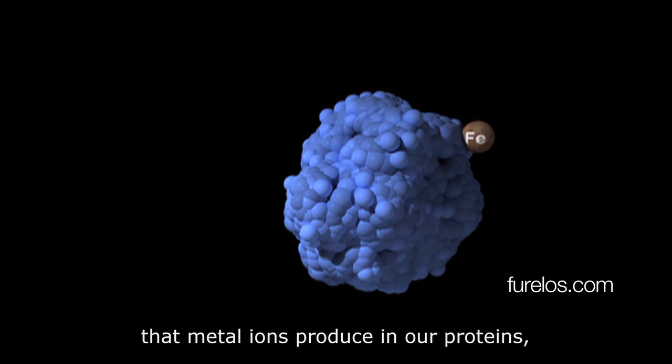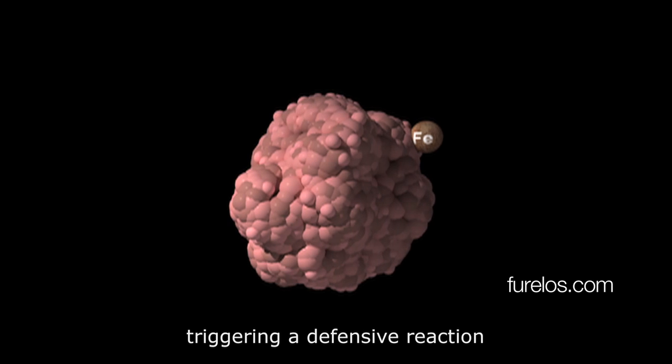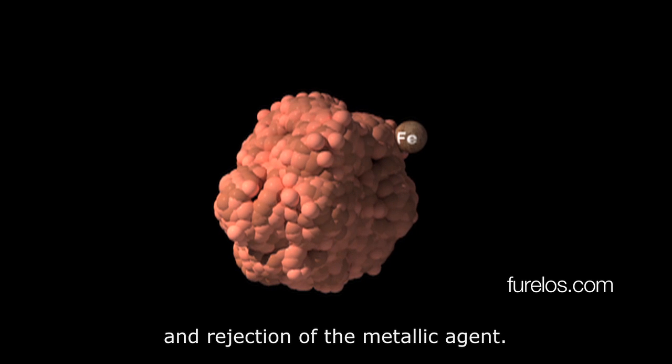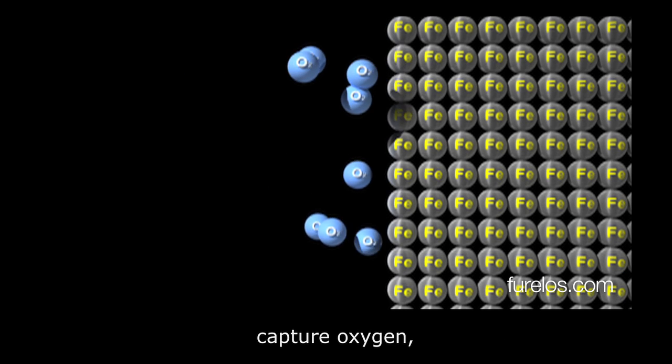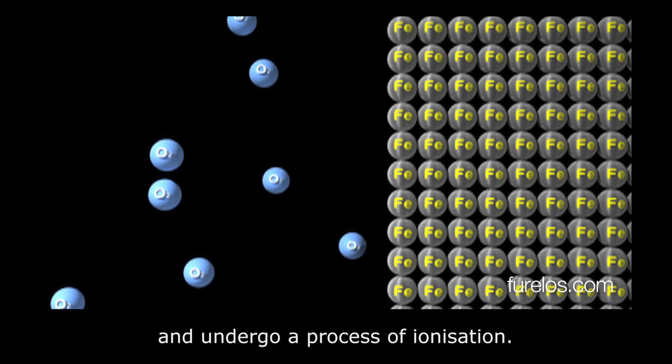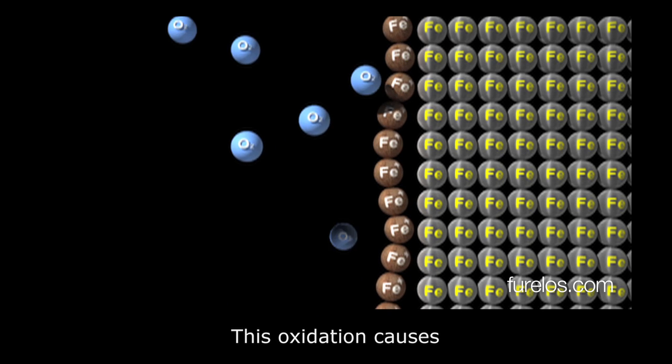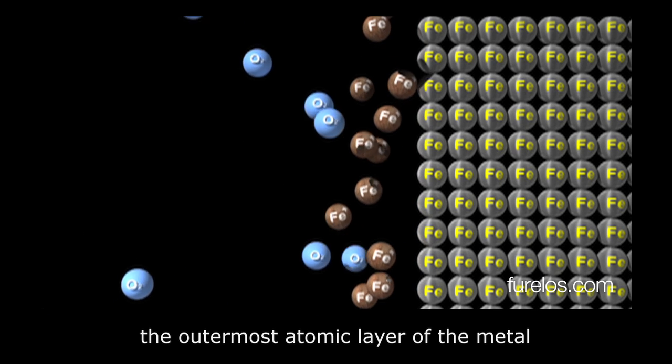Metals in contact with bodily fluids capture oxygen, oxidize, and undergo a process of ionization. This oxidation causes the outermost atomic layer of the metal to suffer changes that alter its junction with the next layer of atoms.